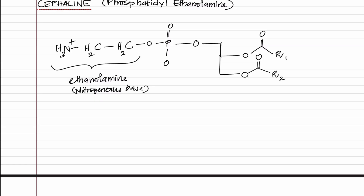Cephalin is mostly soluble in fat solvents except acetone, ethyl, and methyl alcohol. Another point is that they are unstable in air and turn dark — when exposed to air, the substance changes color and becomes dark. So that is all we have to study according to the syllabus.